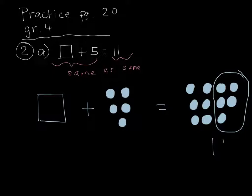We know this is 11, so all we need to do is count here: 1, 2, 3, 4, 5, 6. And now we know that it took 6 more counters to equal 11.